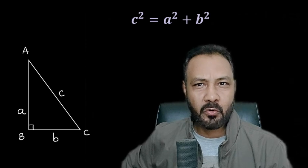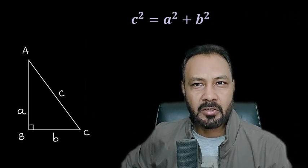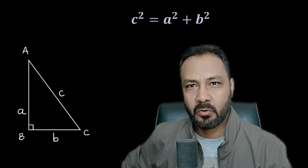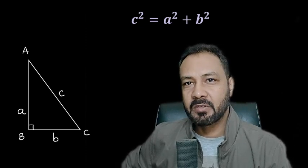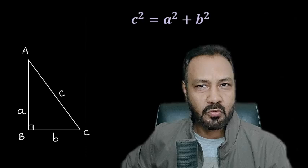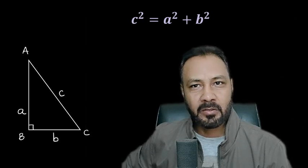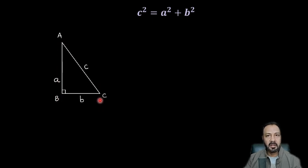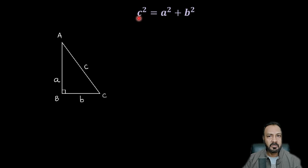Hey everyone, this is Prajish Chaudhary from Quantum Group. In this video I'll geometrically prove Pythagoras theorem. We know that in Pythagoras theorem, the hypotenuse squared is equal to the sum of the squares of the other two sides. Here I have a right angle triangle ABC — AC is the hypotenuse, AB and BC are the other two sides with lengths a, b, and c respectively. So according to Pythagoras theorem, c² = a² + b².